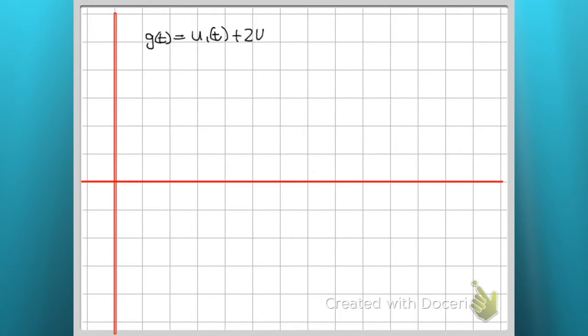So our G of T is U₁(T) plus 2U₃(T) minus 6U₄(T). My tick marks, I'm going by twos.